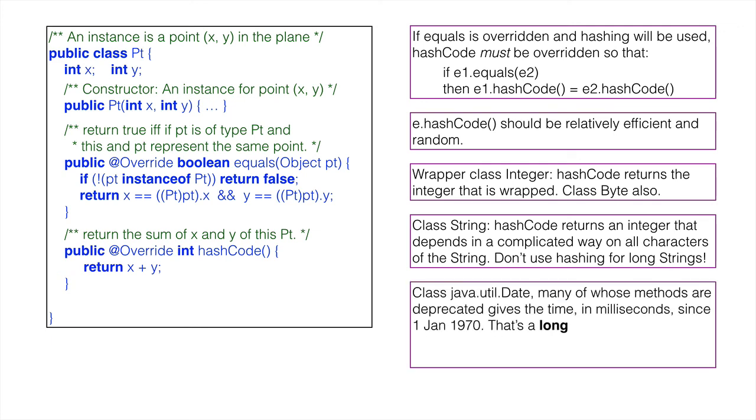Class java.util.Date, many of whose methods are deprecated, maintains a time in milliseconds since 1 January 1970. That's a long value. The hashCode is a manipulation of that long value. This is very efficient.